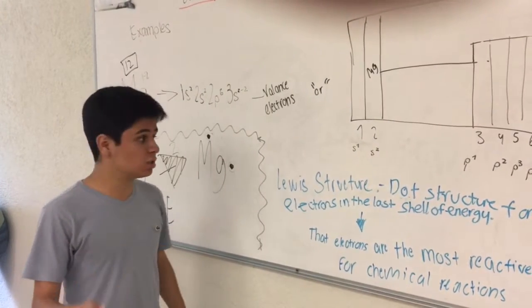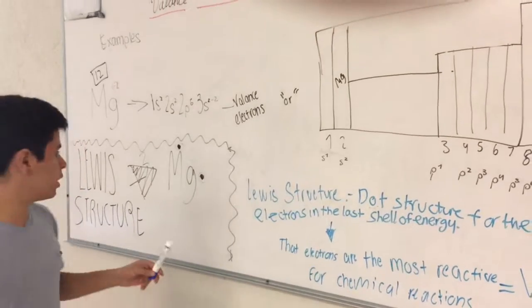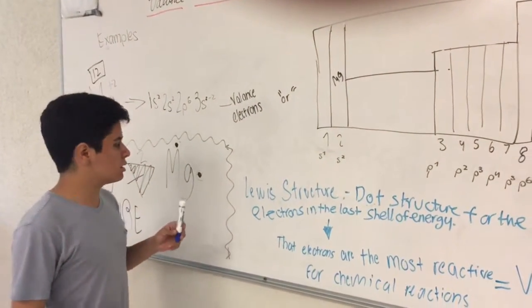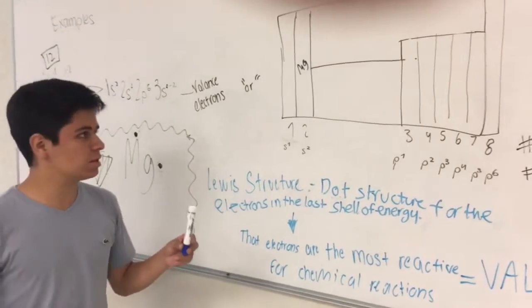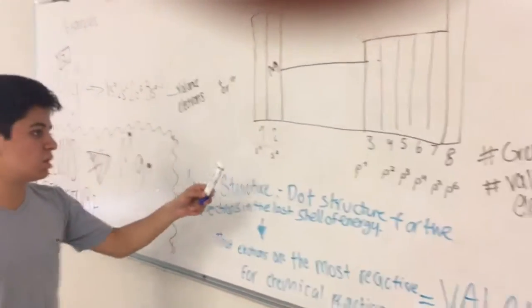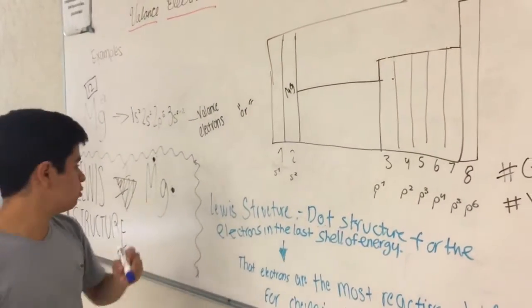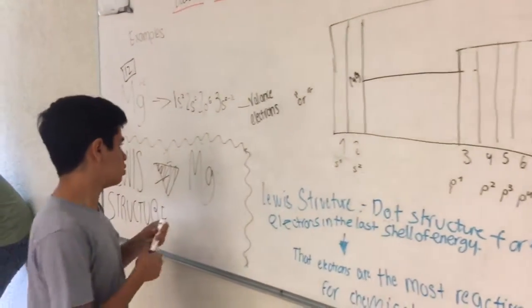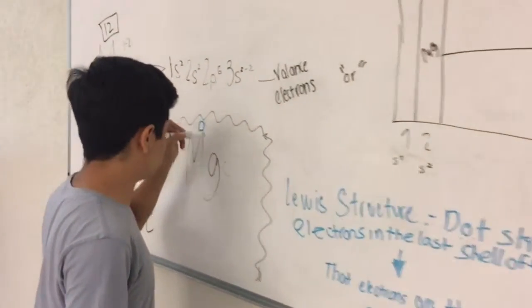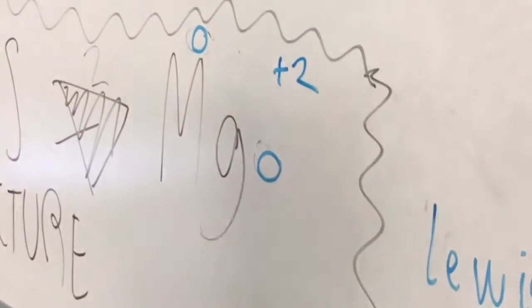You can also use the Lewis Structure with charges. The charge depends on which group the electron is in. In this case, Magnesium is in group number 2 and it has a charge of plus 2. When it has charge, it is represented by open dots, so it will be an open dot and an open dot. In this case, it has the charge of plus 2.